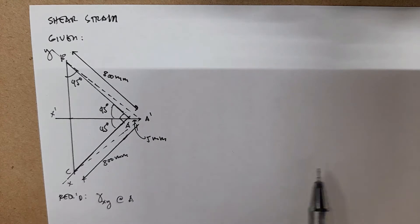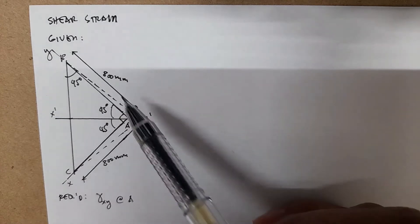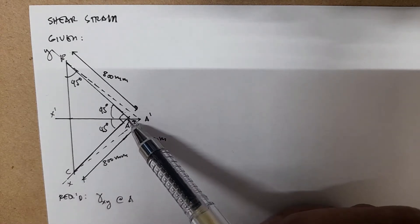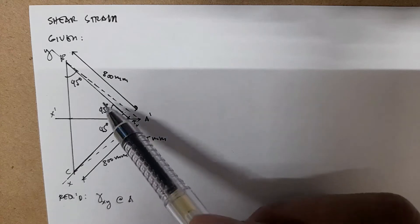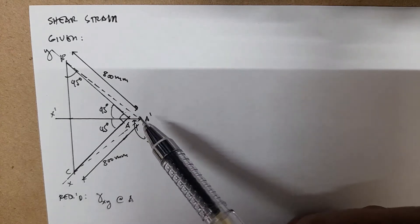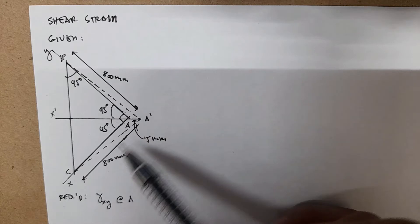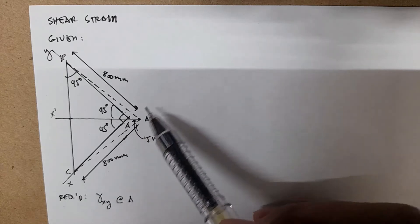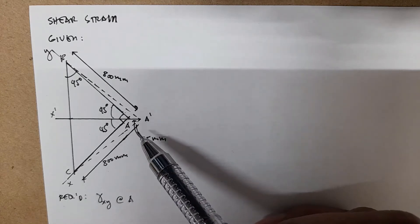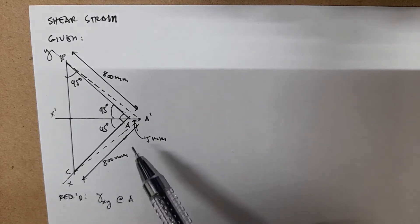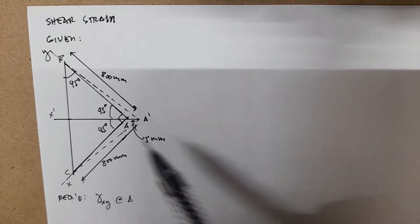Because of that movement, this original angle — which is a 90-degree angle, 45-45 — was changed from 90 degrees to whatever new angle. So we're asked to find that particular angle: how much of this 90 degrees was changed.